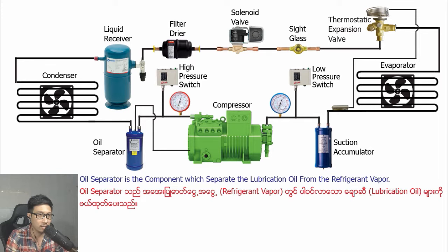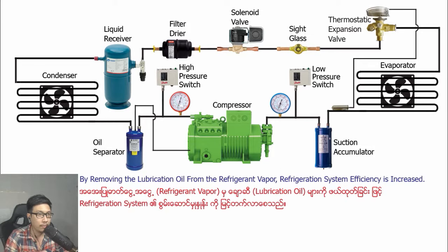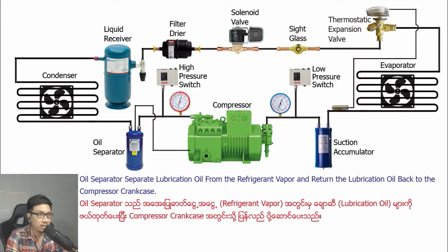The oil separator is the component which separates the lubrication oil from the refrigerant vapor. By removing the lubrication oil from the refrigerant vapor, refrigeration system efficiency is increased. The oil separator returns the lubrication oil to the compressor crankcase.